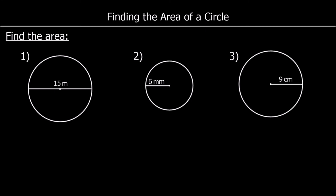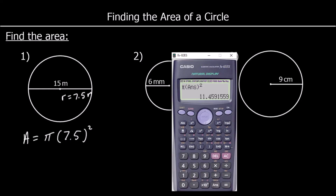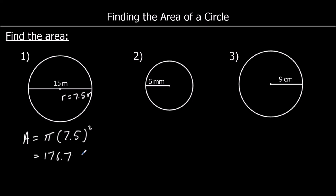To finish up, three questions — pause the video, give them a go, and press play when you're ready for the answers. Question one: we've got a diameter of 15 metres, which means the radius is 7.5 metres. The area is pi times the radius squared — pi times 7.5 squared — which gives 225 over 4 times pi in terms of pi, or pressing S to D, 176.7 metres squared to one decimal place.